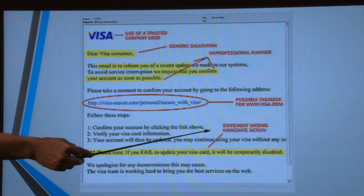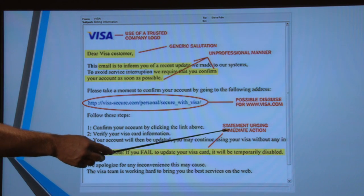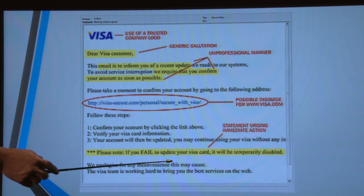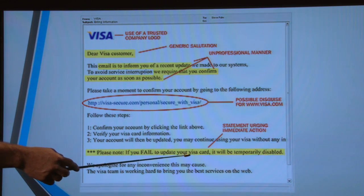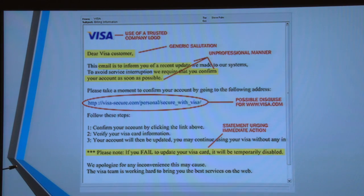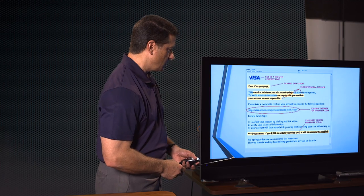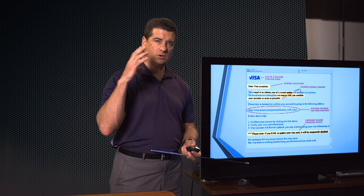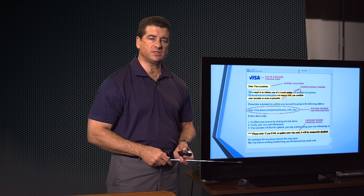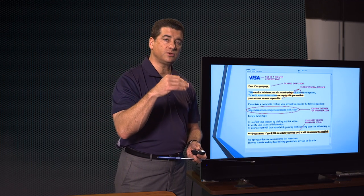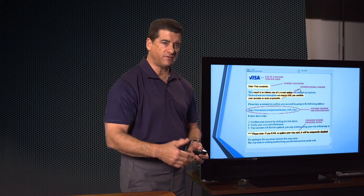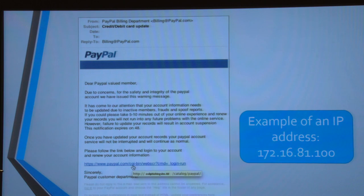It always says something about immediate action — you have to do this right now. 'If you fail to update your Visa card, it's going to be temporarily blocked.' If we get emails like that, we have to use some common sense and pay attention to things that help us spot it's invalid.